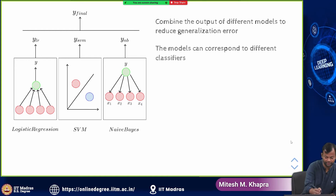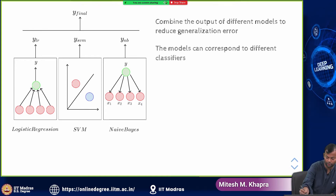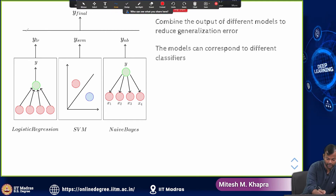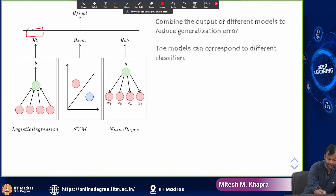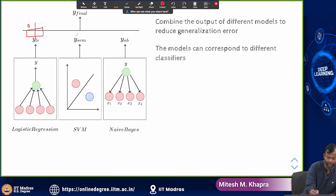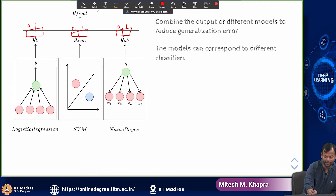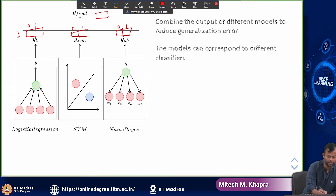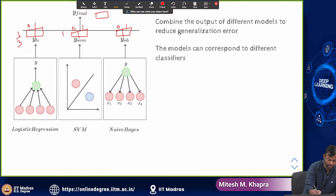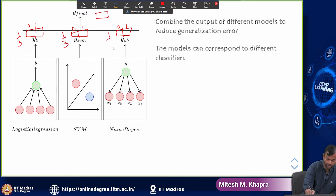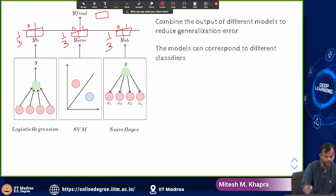Suppose each model is solving a two-class classification problem. Then model one predicts a distribution for 0 and 1, model two also predicts a distribution for 0 and 1, model three also predicts a distribution for 0 and 1, and the final prediction could just be the average of these three distributions.